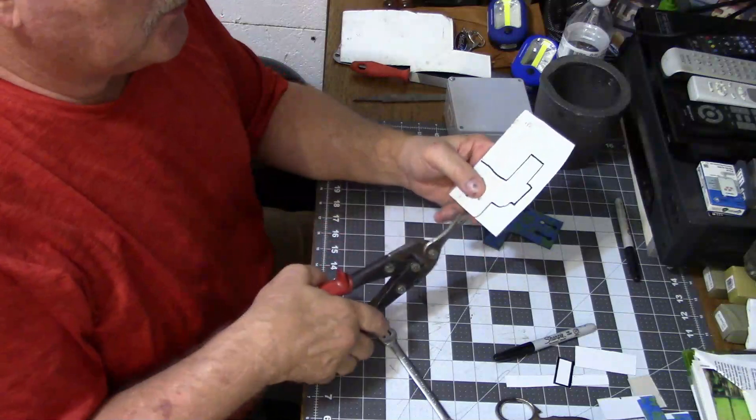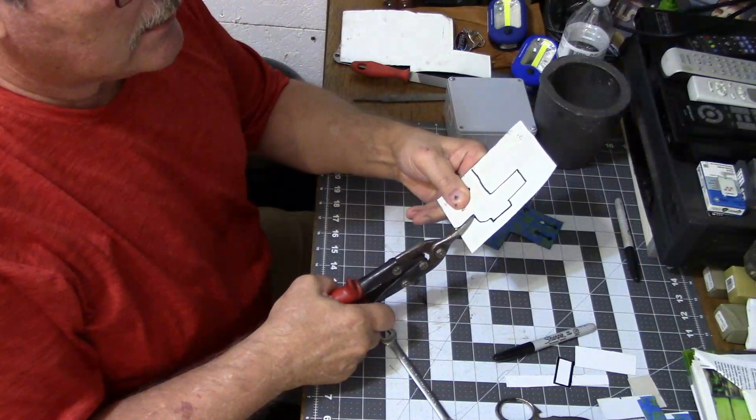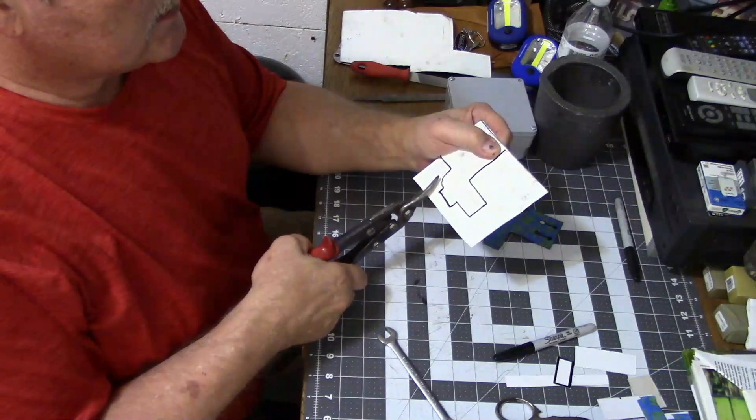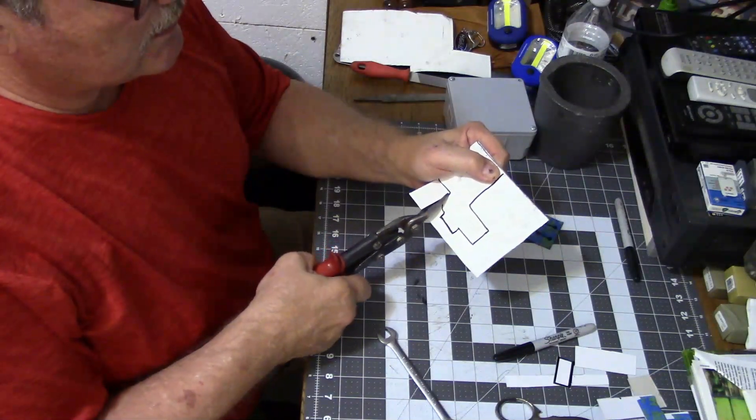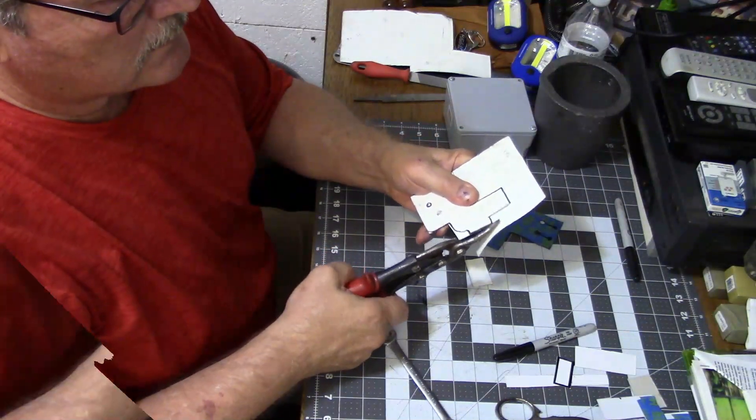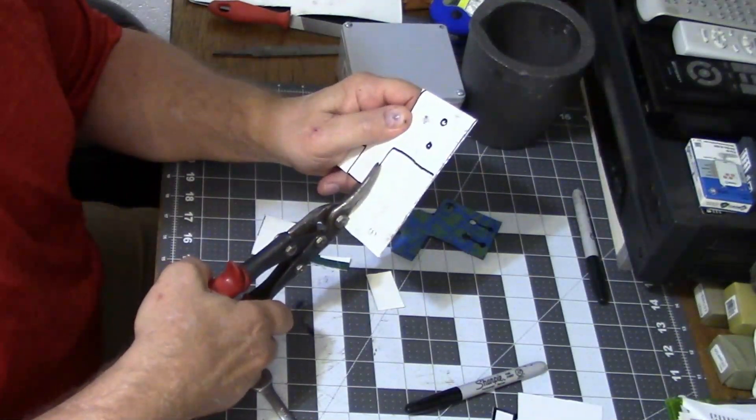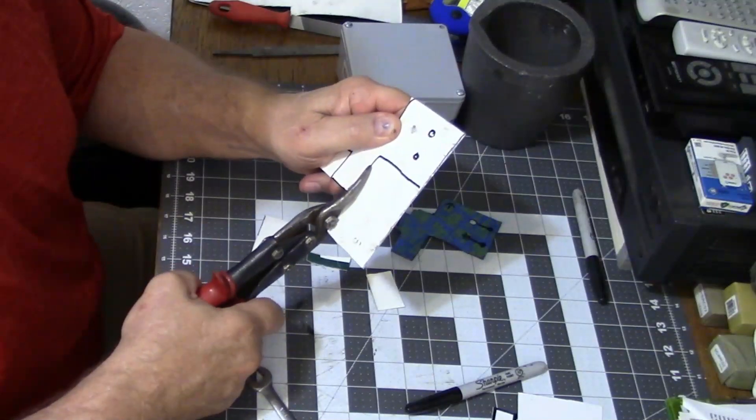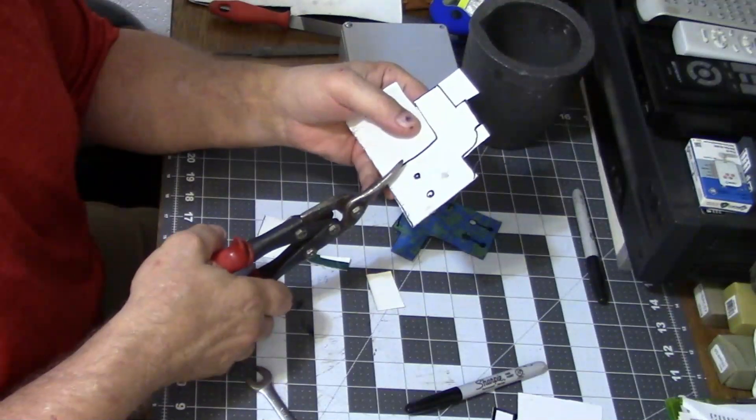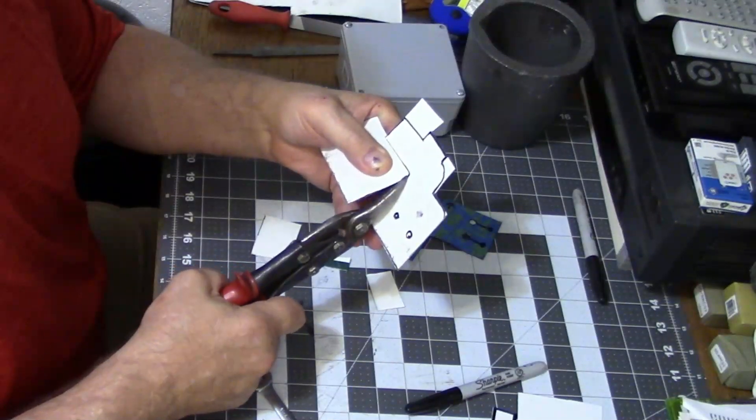Even though your template has these rounded corners, while you're cutting it out just cut everything in 90 degree angles of each other. It's easier to cut it out at this stage like that, because if you're trying to spin your shears around you're going to have a tough time.